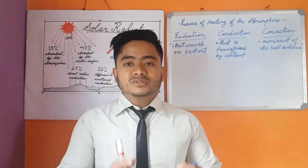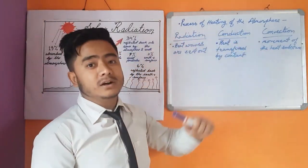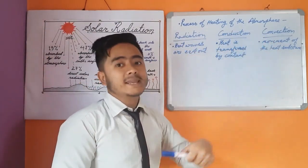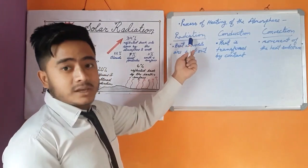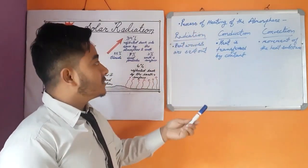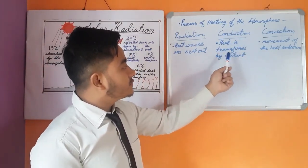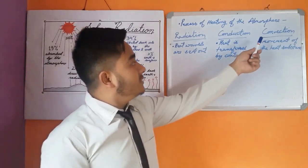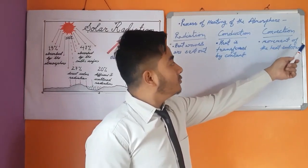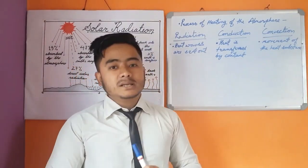We have now studied the three processes of heating of the atmosphere: radiation, conduction, and convection. Radiation is the process by which heat waves are sent out from the Earth's surface. Conduction is the process by which heat is transferred by the movement of the heated substance from one place to another place.